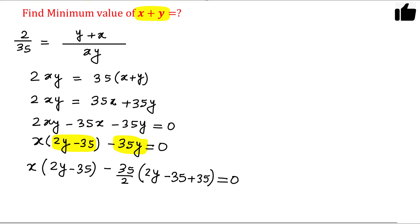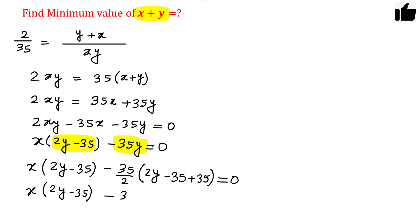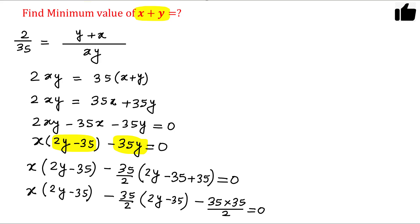Now I can rewrite the expression. This gives x times (2y minus 35) minus (35/2) times (2y minus 35) plus 35 times 35 divided by 2, all equal to 0. I can then multiply through by 2 and take (2y minus 35) as a common factor from both terms.